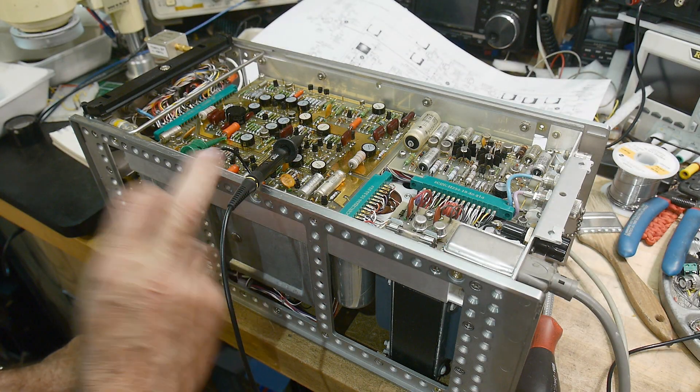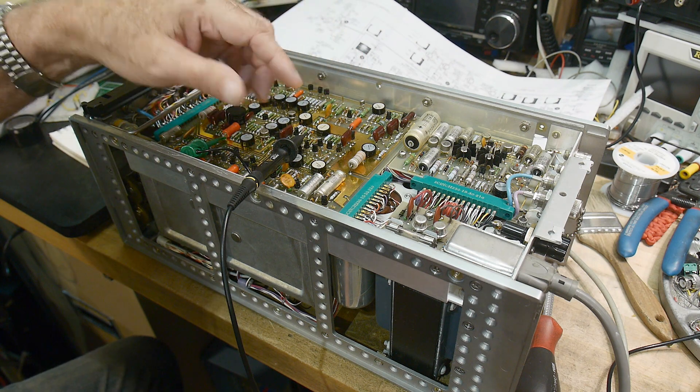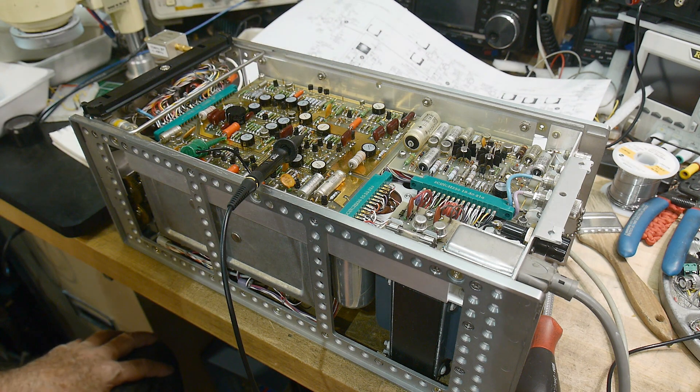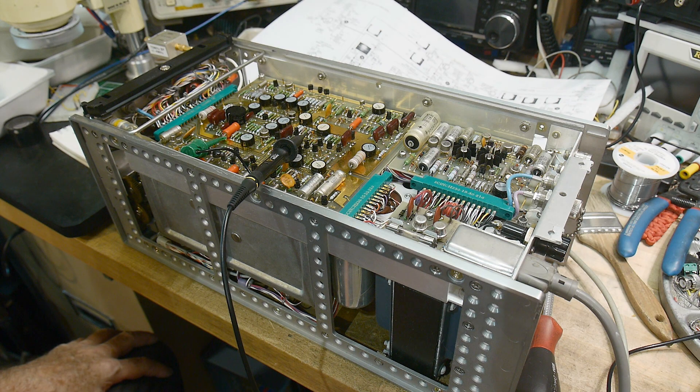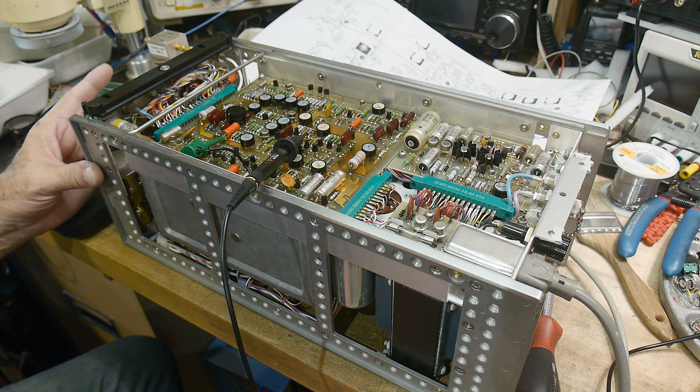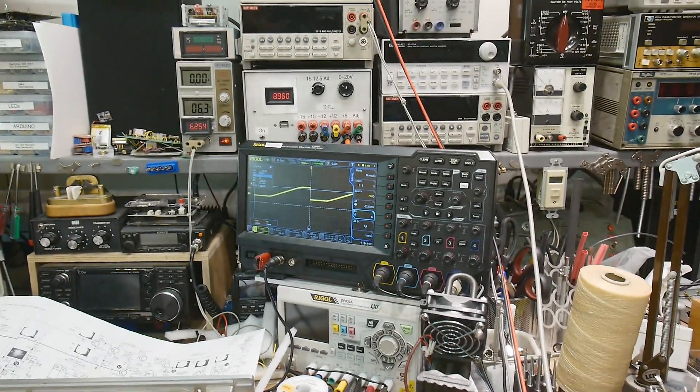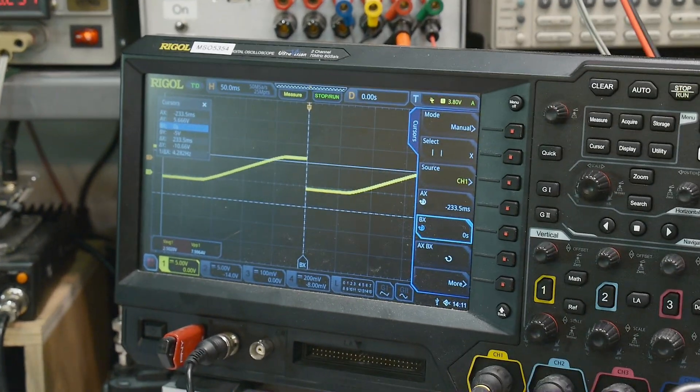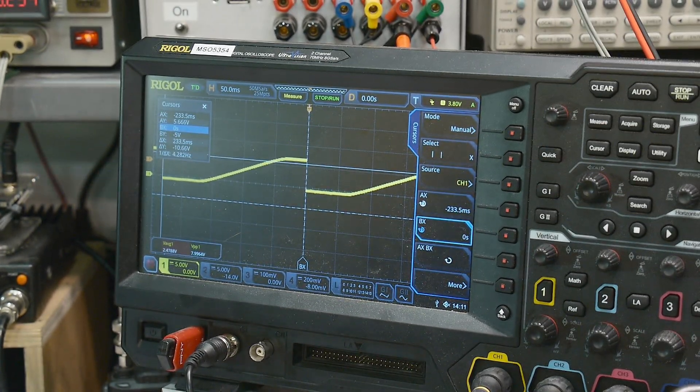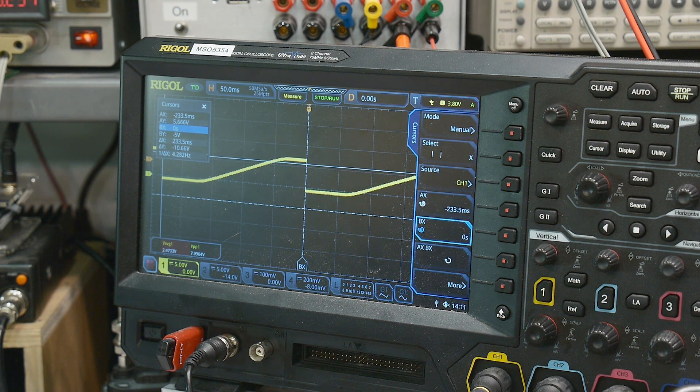Alright, I'm looking at the bottom side of the instrument which has the circuitry that controls the sweep. Let me turn it on, fast sweep. That is a sweep ramp over there, and it's repeating about every 233 milliseconds. So that's the fast sweep.